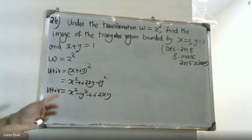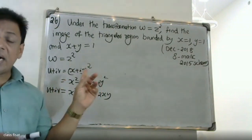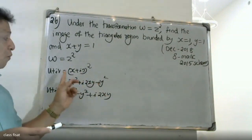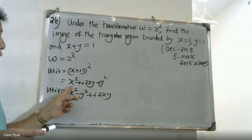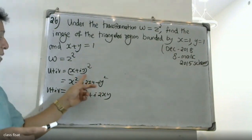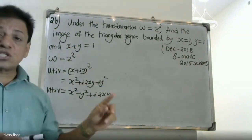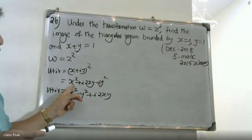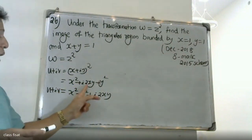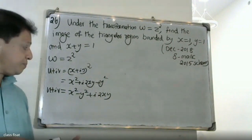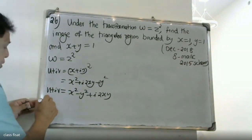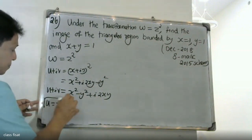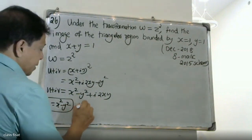Expanding using a plus b squared equals a squared plus 2ab plus b squared, we get x squared plus i into 2xy plus i squared y squared. Since i squared equals minus 1, we have u plus iv equals x squared minus y squared plus i into 2xy. Comparing, u equals x squared minus y squared and v equals 2xy.